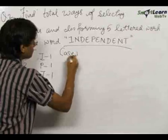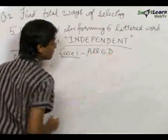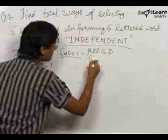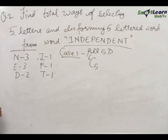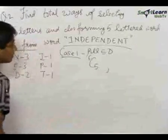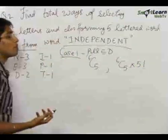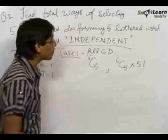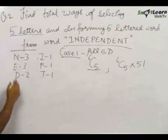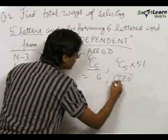Case 1: All five letters different. Since there are six different alphabets, we can select any five out of these six. The number of selections is 6C5 = 6. These five alphabets can be arranged in 5! = 120 ways, so the total number of words formed is 6 × 120 = 720.